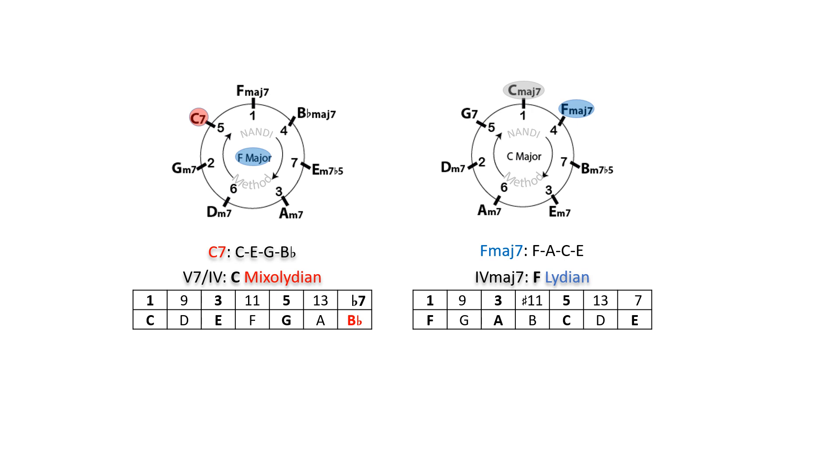C7, the 5-7 of F major 7, contains an outside note, B flat. The 5 chord in F lydian is C major 7. However, C7 appears as a 5-7 chord in the parallel F major scale and uses C mixolydian.